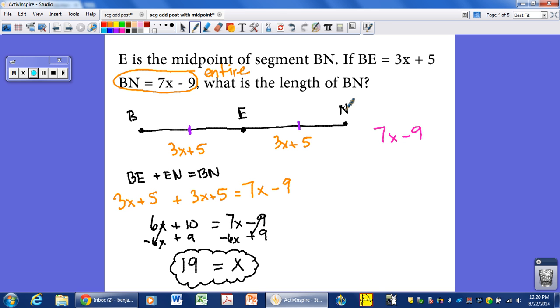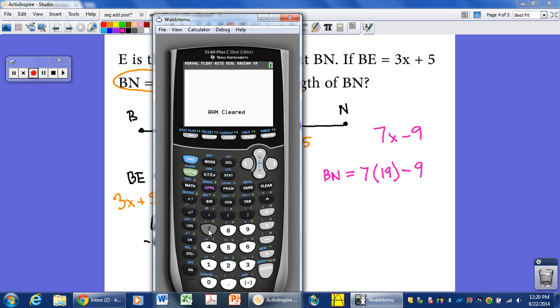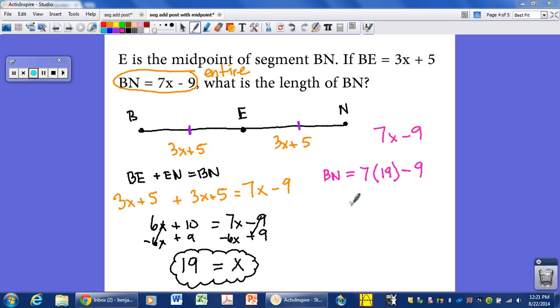But it says, what is the length of BN? So now we have to plug it back in. Let's go back to pink so we can do this. So BN is 7X, and in this case, X is 19 minus 9. Well, let's go ahead and pull up a calculator real quick to do this calculation. 7 times 19, just to make sure. I know 7 times 20 is 140. So it's going to be 7 less or 133. Excellent. So that means that we have 133 minus 9. And 133 minus 9 is 124 units long is the entire length of BN. We'll put that in a box. That is your final answer. If you wanted the length of BN, we have found the length of BN.